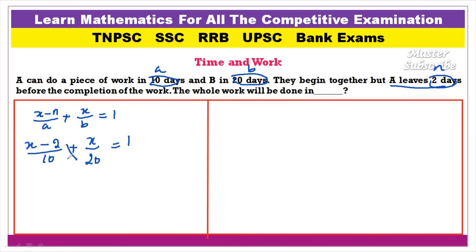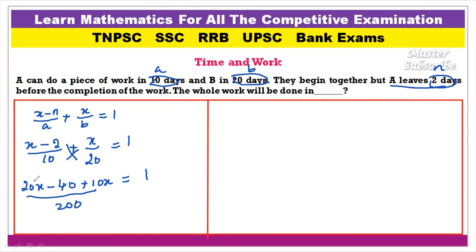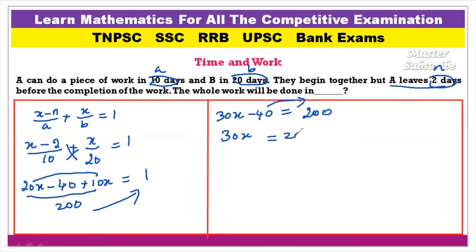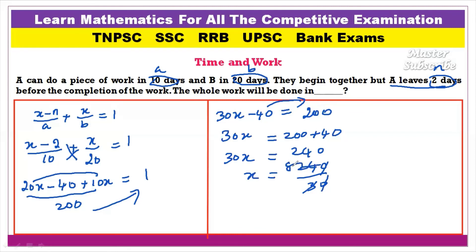Now we will cross multiply: 20 times x minus 2 gives 20x minus 40, plus 10 times x gives 10x, is equal to 1 multiplied by the denominator. So 20x plus 10x gives 30x, minus 40 equals 200. Therefore 30x equals 240, and x equals 240 divided by 30, so the total number of days is 8 days.